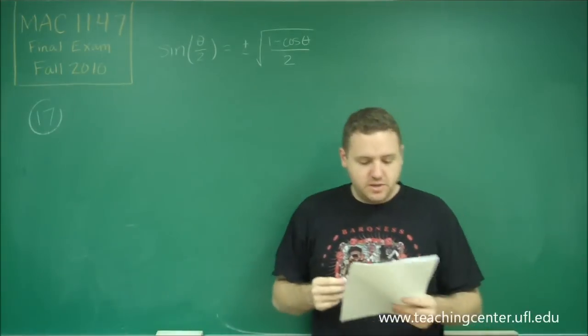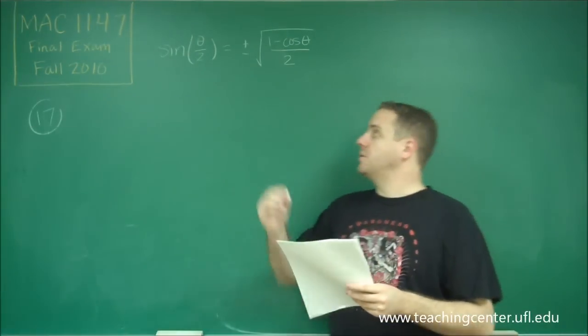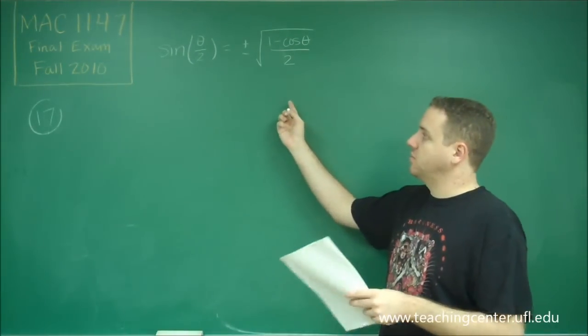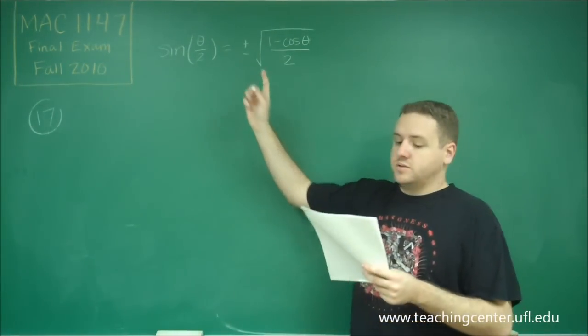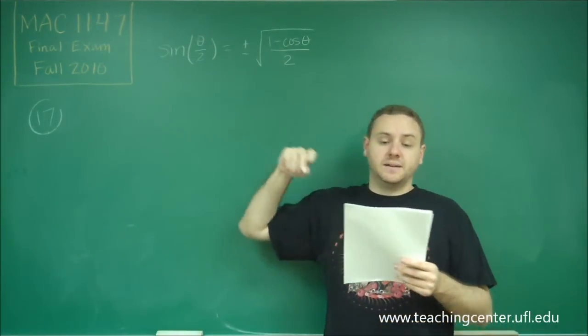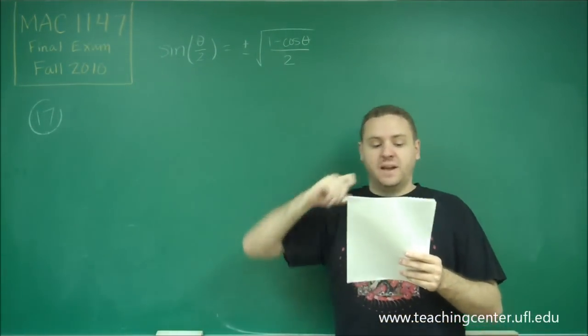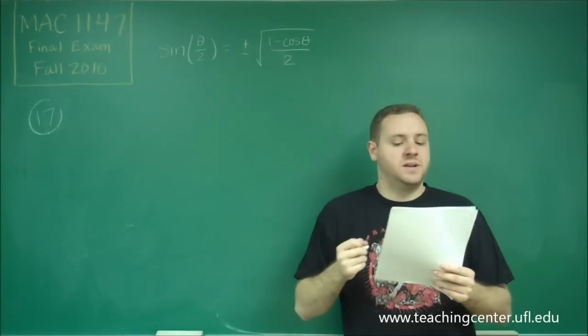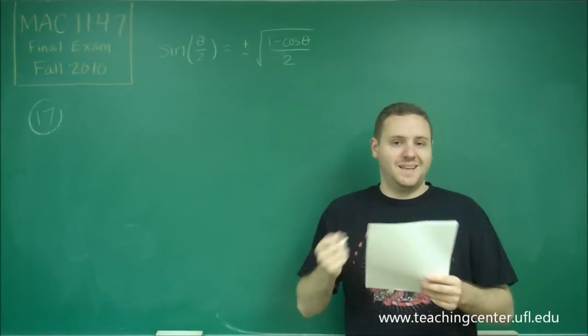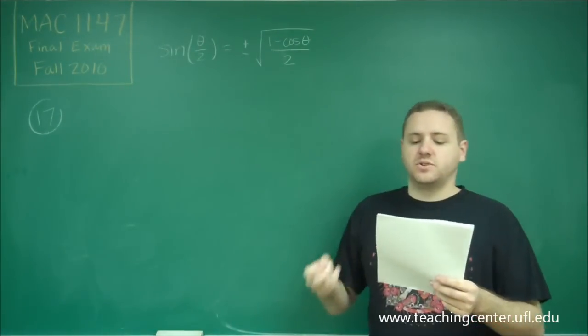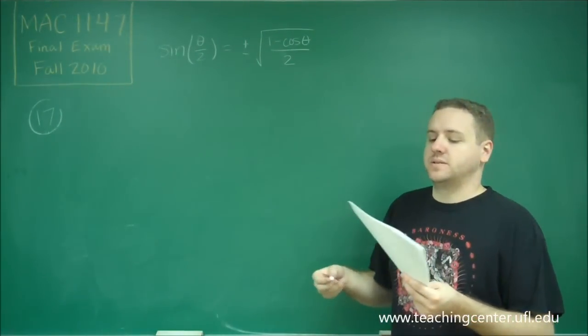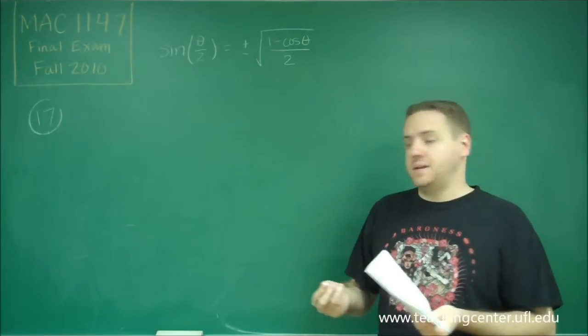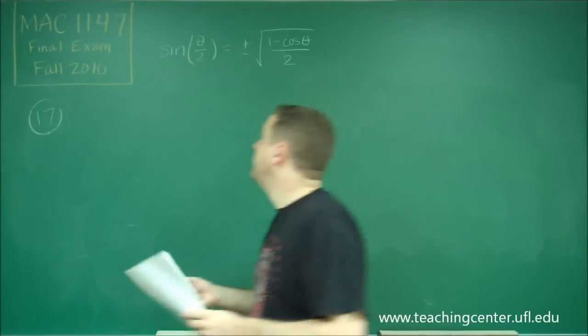For number 17, we need to use the half angle formula, which I've written here on the board, for sine, to find sine of 195 degrees. The hint tells you that 195 degrees is 390 over 2.